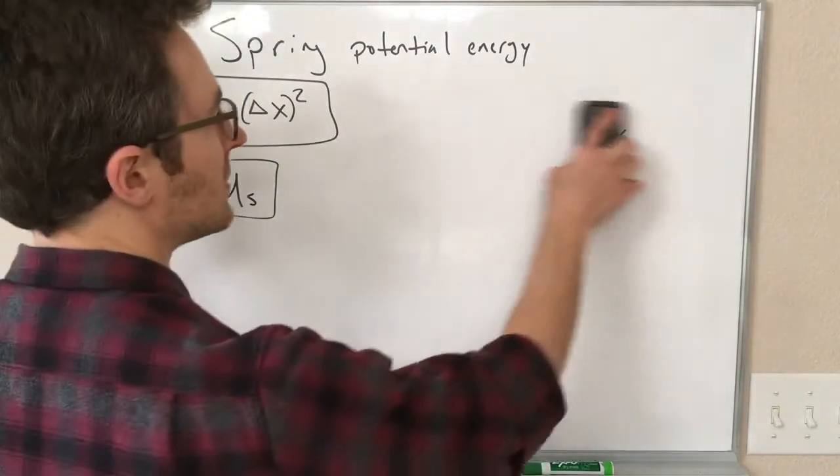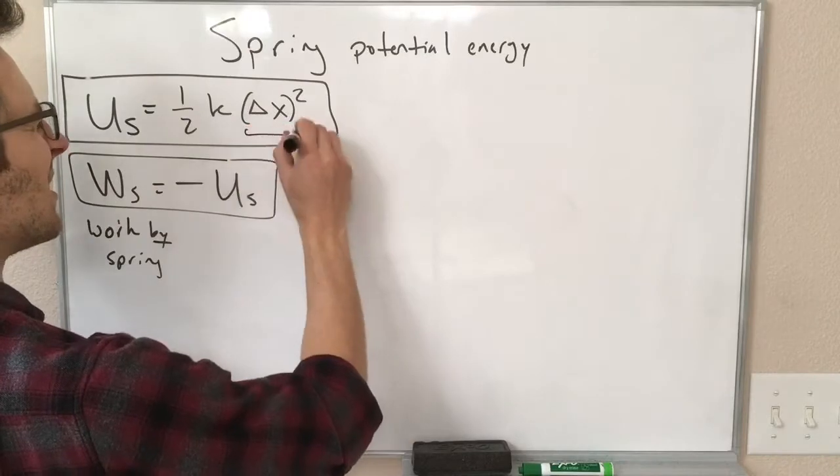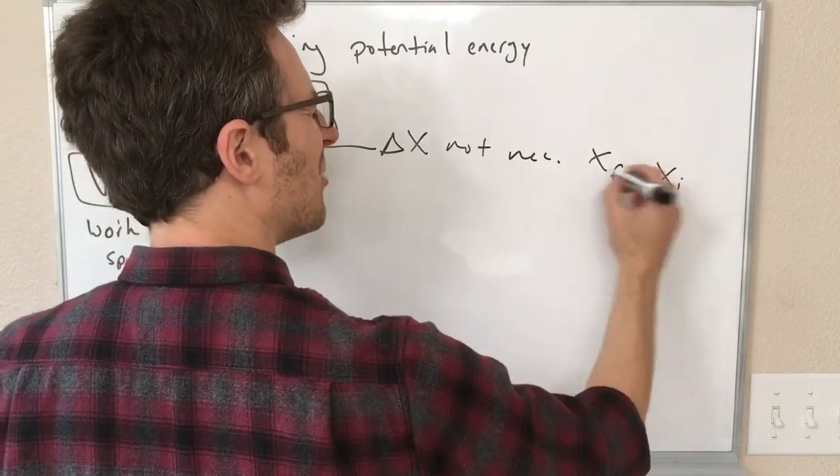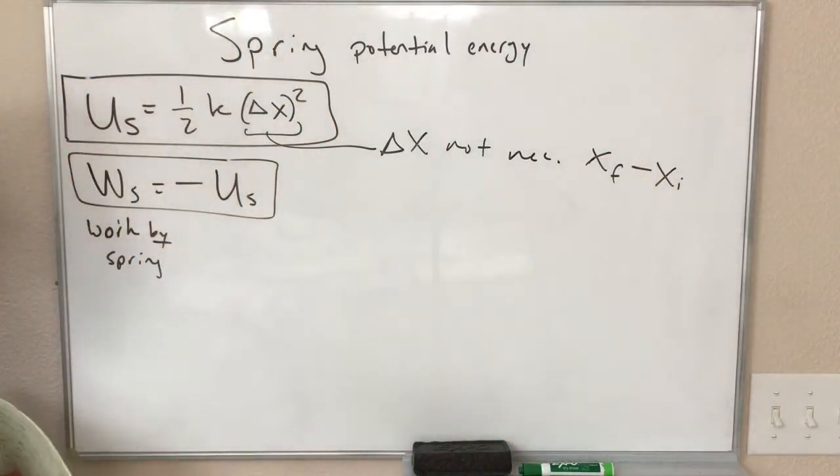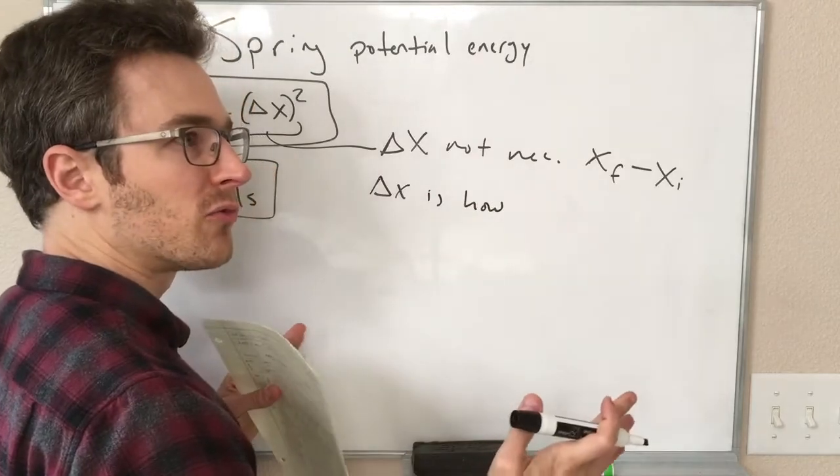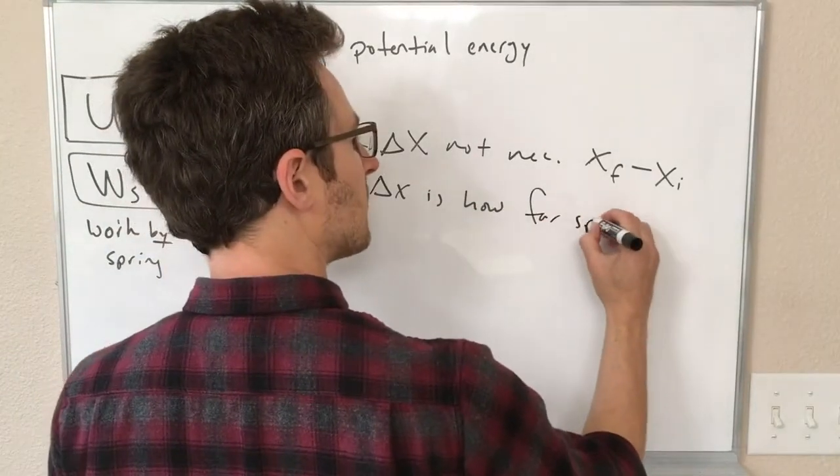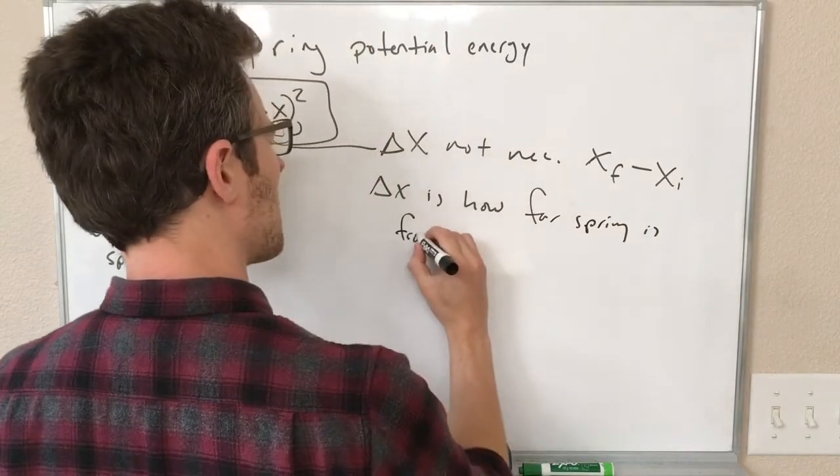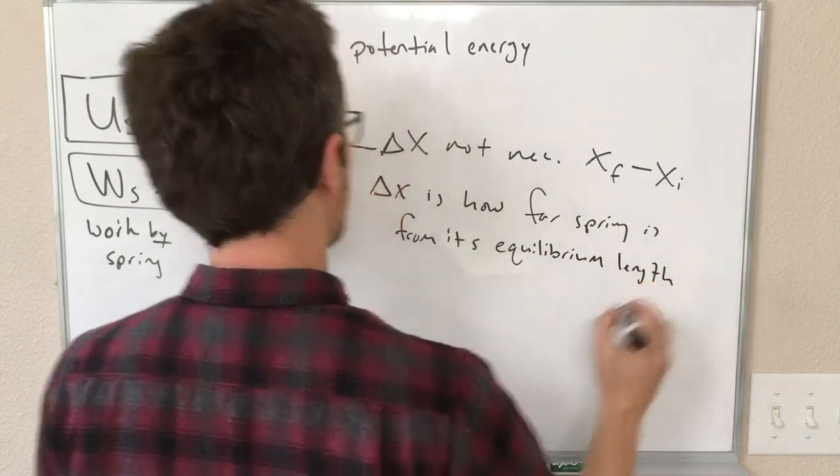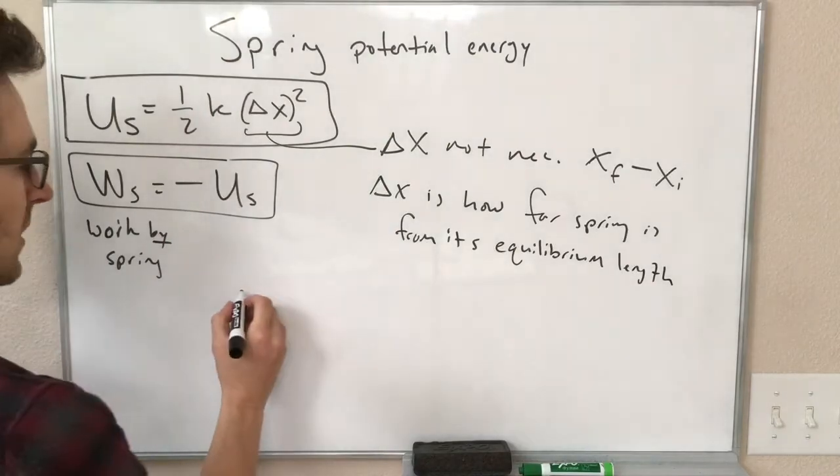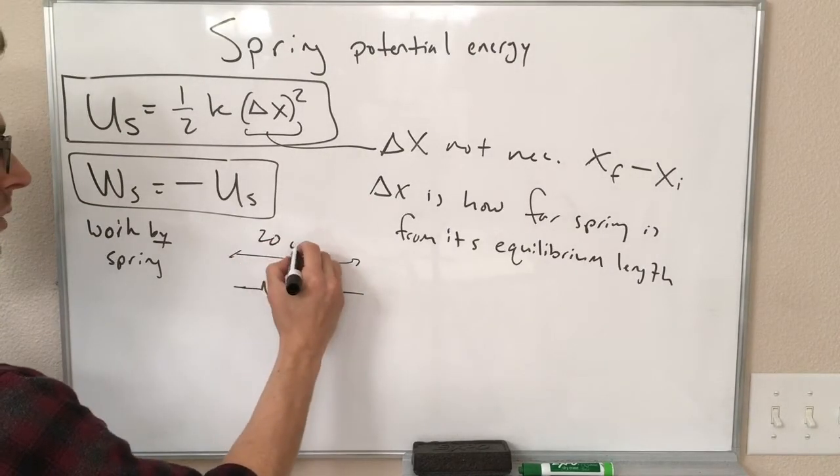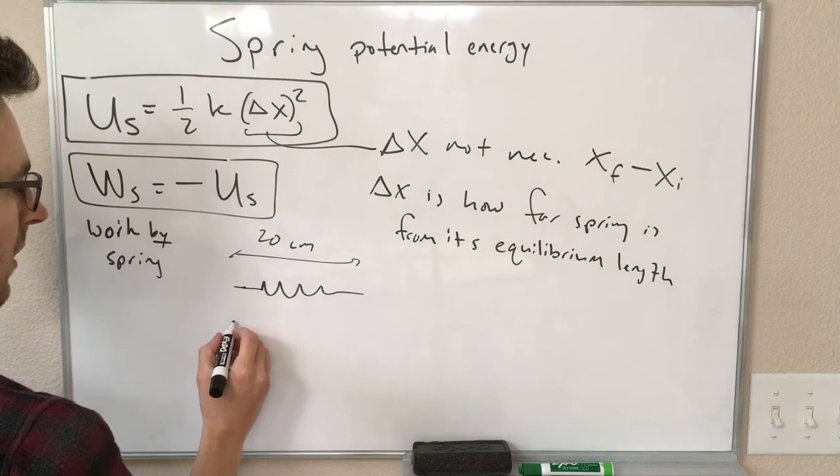One thing you might run into here is with this delta x. So in this equation, delta x is not necessarily x final minus x initial, because delta x is meaning something different here. Delta x is how far the spring is from equilibrium, from its equilibrium length.